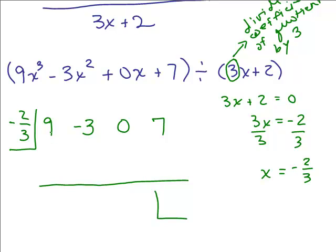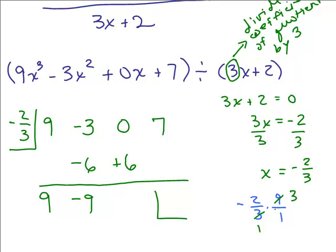Step 1: bring down the 9 and multiply by negative 2/3. Negative 2/3 times 9 — the 3 cancels into the 9 — gives negative 6. Then add down: negative 3 plus negative 6 is negative 9. Now multiply negative 9 by negative 2/3. A negative times a negative is positive, and 2/3 times 9 is 6, so we get positive 6. Add down: 0 plus 6 is 6.